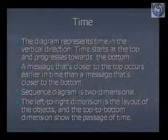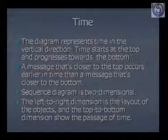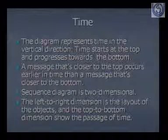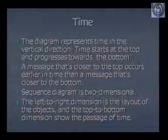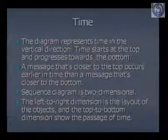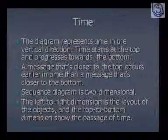The next concept is the time representation. The diagram represents time in the vertical direction — time starts at the top and progresses toward the bottom. Objects are placed from left to right, but time progresses top to bottom for each object. A message closer to the top occurs earlier in time than a message closer to the bottom. This is a two-dimensional figure: one dimension shows messages transmitted from object to object left to right, and the other shows time from top to bottom.